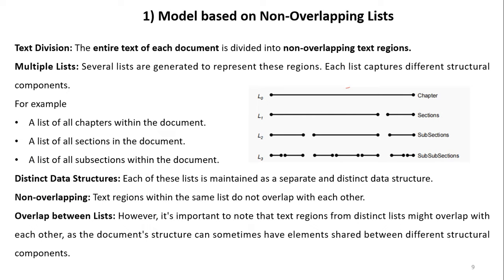The first model is the model based on non-overlapping list. Text division: the entire text of each document is divided into non-overlapping text regions. Multiple lists are maintained — several lists are generated to represent these regions. Each list captures a different structural component. For example: a list of all chapters within the document, a list of all sections, and a list of all subsections. If a chapter contains sub-subsections, a list is also maintained for those.